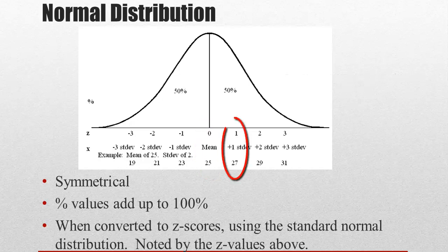If we go up 1, 27 minus 25 gives us 2. 2 divided by 2, which is our standard deviation, will give us 1. So our Z score is 1, so where those two match up.